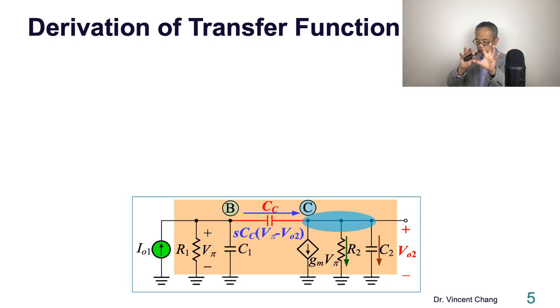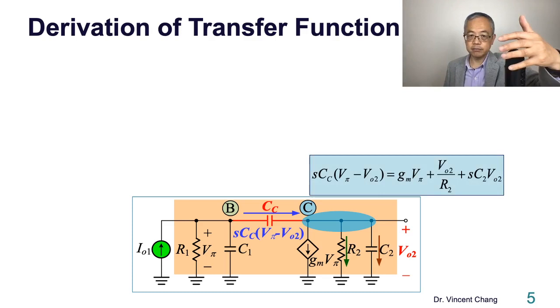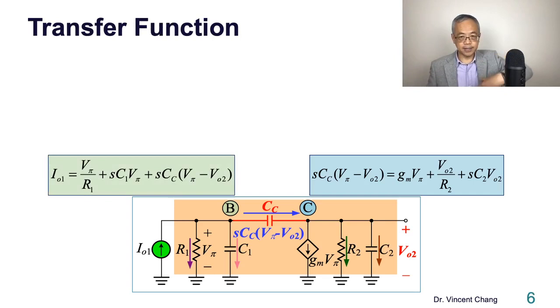And the second equation is based on the node equation at the collector node. So the blue current is incoming, coming in equals three coming out. Coming in, the blue equals the first coming out GmVπ, the second coming out VO2 divided by R2, the last one is SC2 times VO2. Then you bring back the previous equation. This is the set of equations.